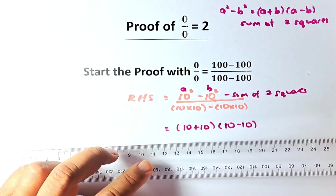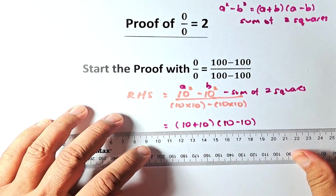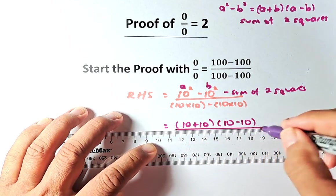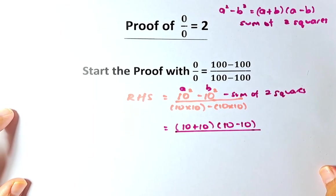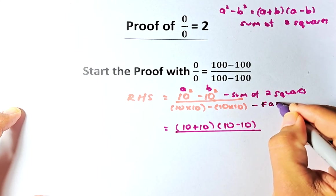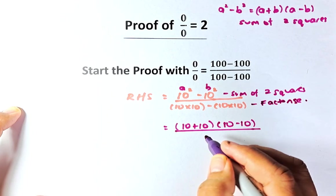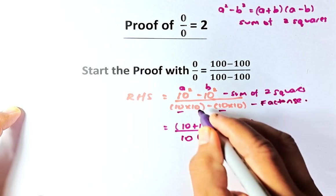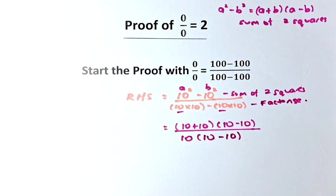And then we are going to simplify the denominator. The denominator is 10 times 10 minus 10 times 10. So what we're going to do, we're going to factorize the denominator. So 10 is a common factor. So we take out the 10, and what's left is going to be 10 minus 10. So that is so far what we've done.